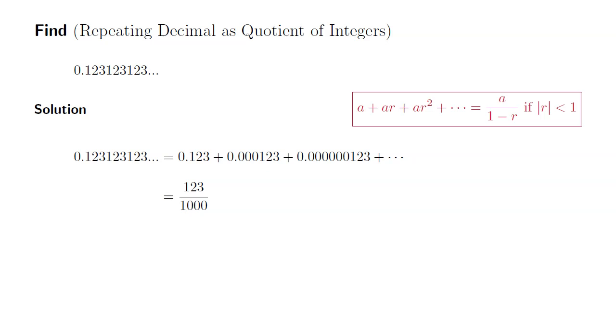For the next one, we need to move the decimal point to the left three more notches, so we divide by 1000 again. So we have 123 divided by 1000 divided by 1000. And for the next one, we move the decimal point to the left three notches. So we have 123 over 1000 times 1 over 1000 squared, and so on.